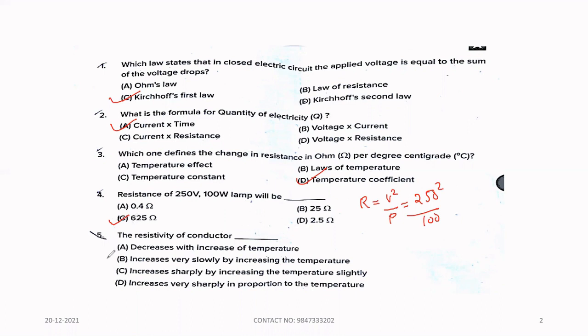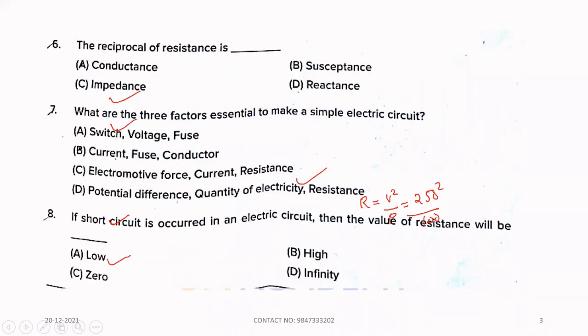Fifth question, the resistivity of conductor. Option B, increases very slowly by increasing the temperature. Next question, the reciprocal of resistance is option A, conductance.